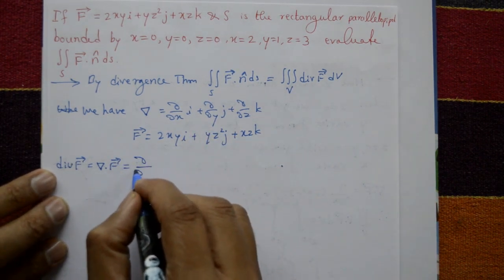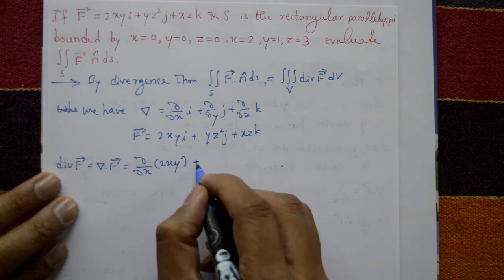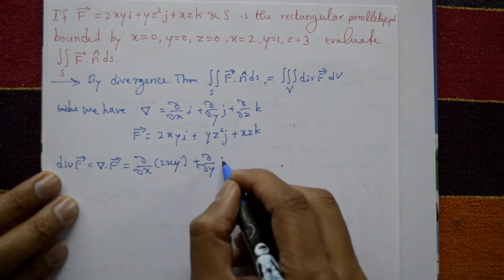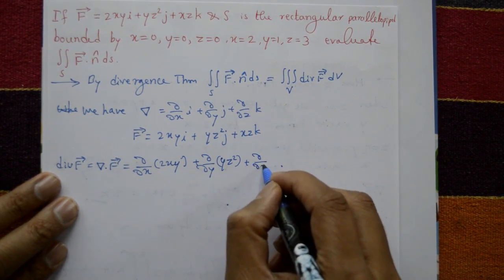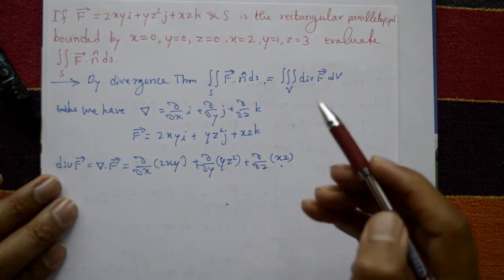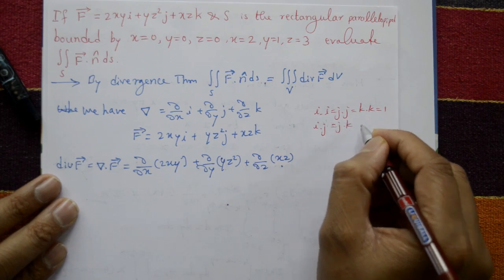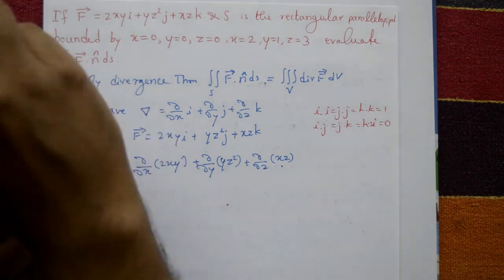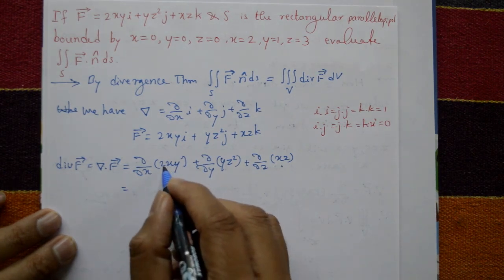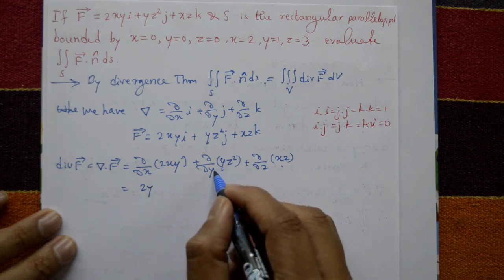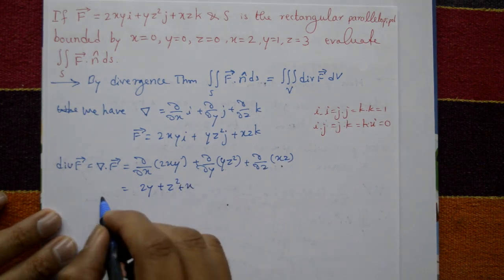Taking only i·i component: ∂/∂x of 2xy gives 2y. Then j·j component: ∂/∂y of yz² gives z². Then k·k component: ∂/∂z of xz gives x. Note that i·i = j·j = k·k = 1, while cross terms like k·i = 0. So divergence of F = 2y + z² + x.